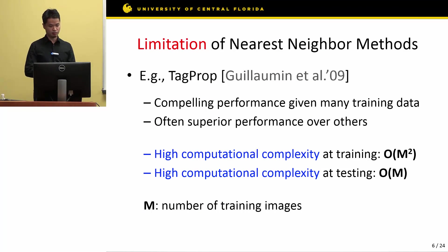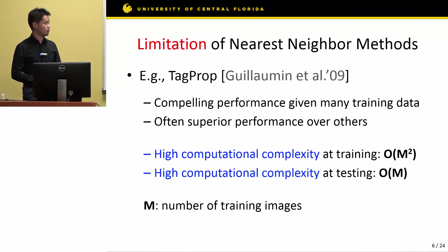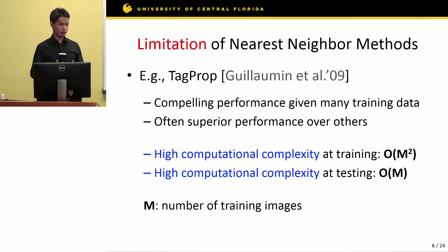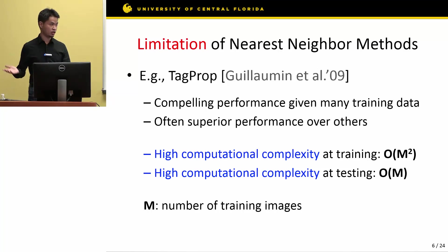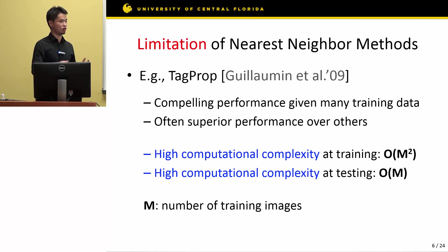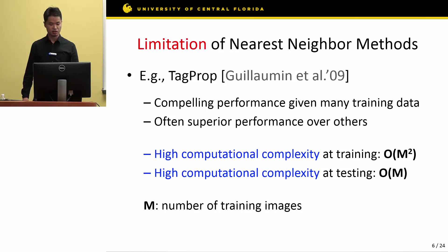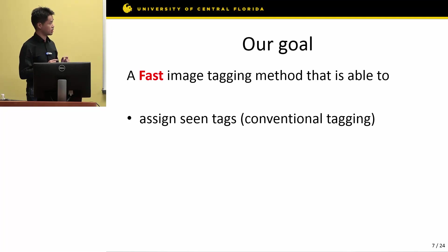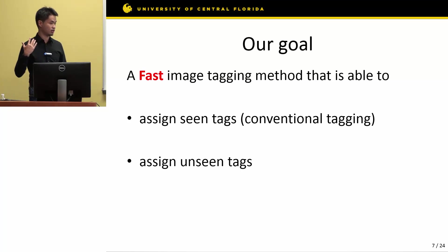Looking at the conventional image tagging method, the best approach is nearest neighbors, as I mentioned. However, nearest neighbors requires M-squared complexity to train the model, which is computationally expensive, and although it achieves state-of-the-art results, few people use it — in most general cases, people use the discriminative method. Given that both conventional image tagging and zero-shot tagging methods are computationally complex, we want to develop a fast image tagging method that is able to assign seen tags — what conventional tagging does — and assign unseen tags — what zero-shot tagging does.